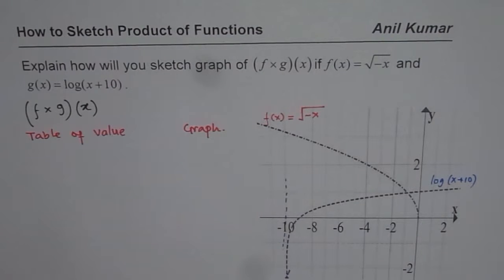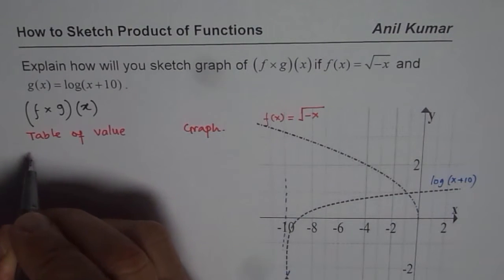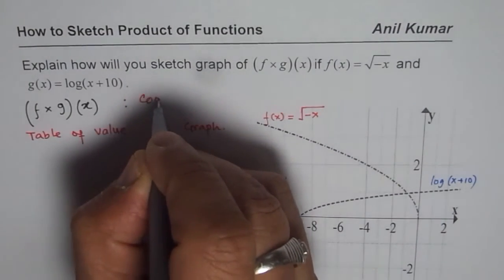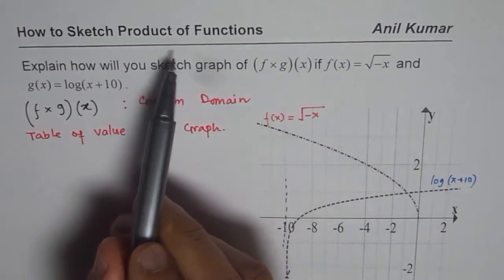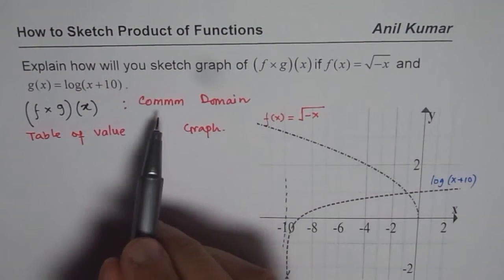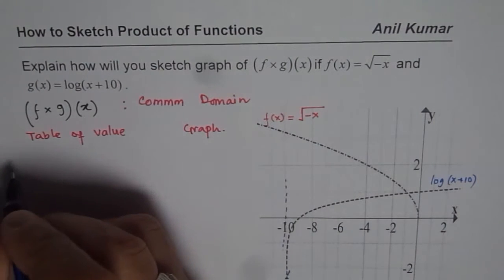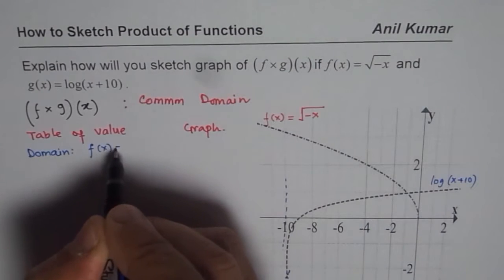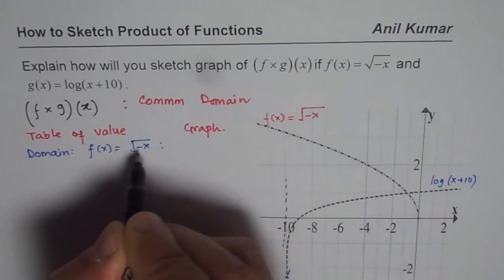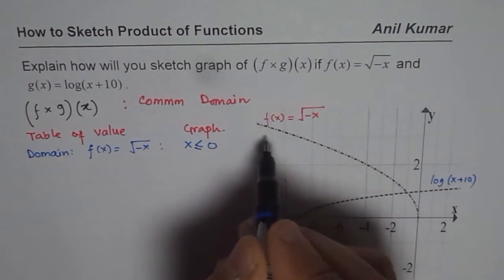Before getting there, one thing that is very critical for us to understand is what values should we consider. For those values, we always need to consider the common domain, since the combination — in this case the product — of functions can only be done in the common domain of both functions. Let us begin by finding the common domain. The domain of f of x, which is square root of minus x, requires x to be less than or equal to 0.